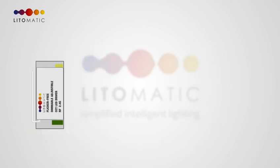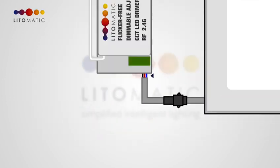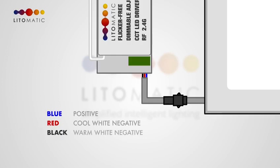For this, we will connect dimmable and tunable LED driver to COB spotlight or SMD downlight. There are three wires for connecting Light-O-Matic LED panel to driver: Blue positive, red cool white negative, black warm white negative.